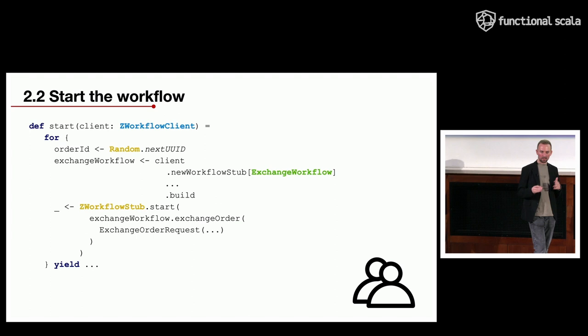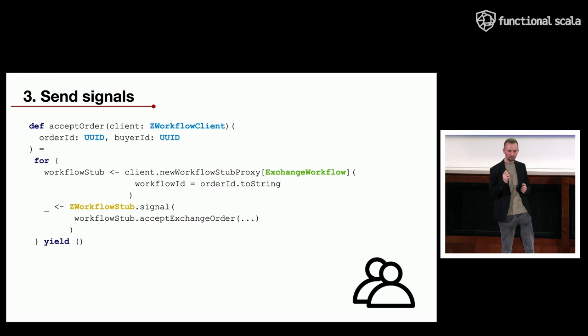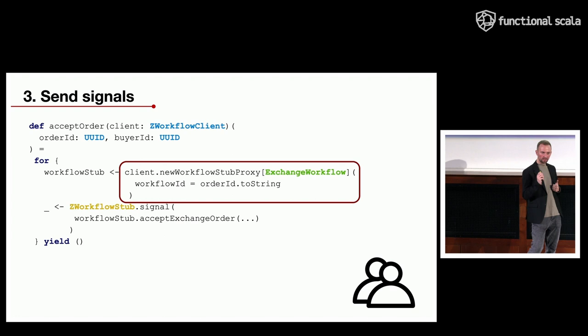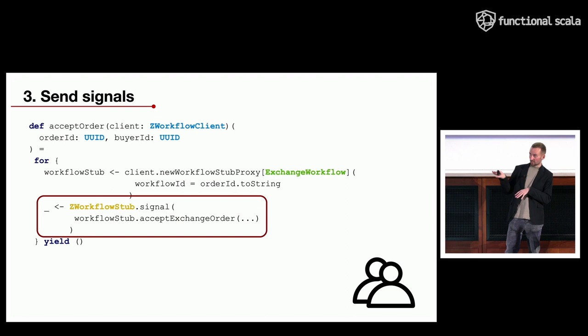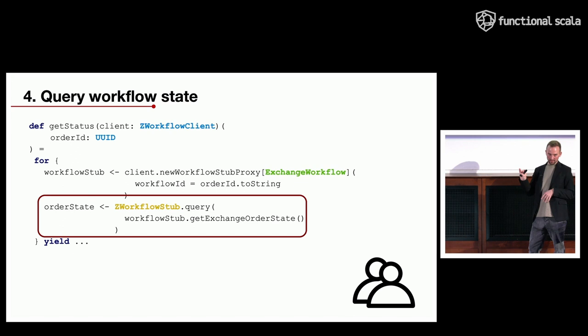You configure the resiliency timeout for a particular run attempt for the workflow itself and set retry options — in this case, simply retry three times. Then you build it. Having this workflow stub, you start the workflow process asynchronously by invoking the workflow method inside the start function; it submits a workflow task to the queue, a worker picks it up and executes it. To send signals to a running workflow you use a workflow stub proxy, specifying the unique ID, then simply invoke the signal method. To check workflow state you invoke the query method inside the query function.